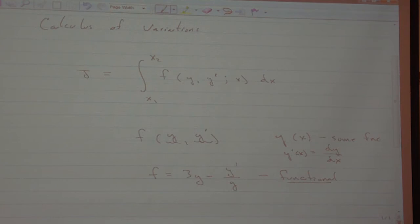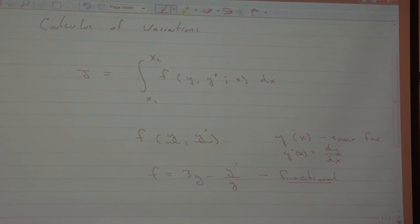Function space is the space where all the possible functions live. An element of function space is a function — just as an element of the number line is a particular number. For example, 6.0289 is an element of the real line. x squared is an element of function space. So is x squared plus 1.